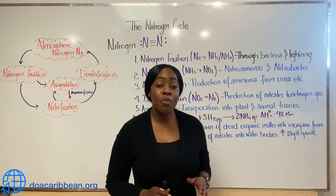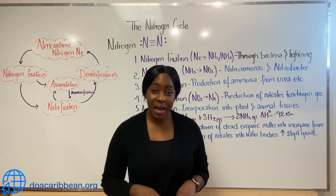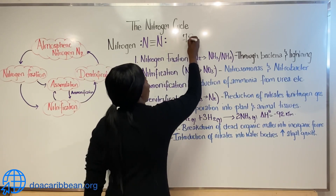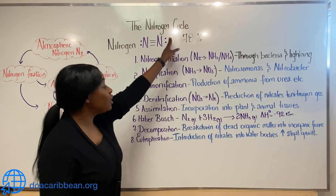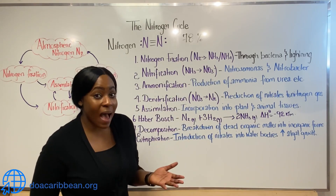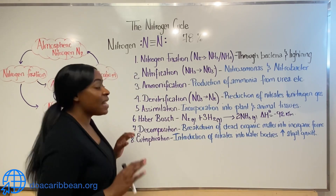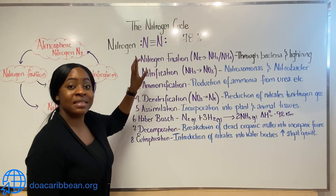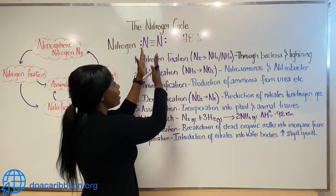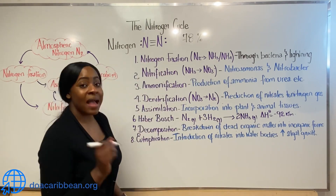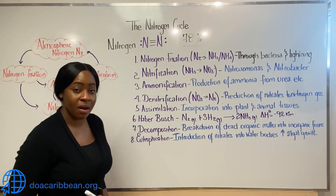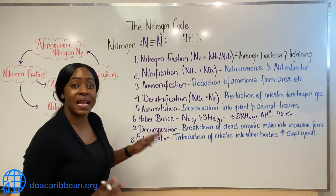Nitrogen, the most abundant gaseous element. As a matter of fact, it makes up 78% of our atmosphere. And nitrogen is also ubiquitous in many living things, like plants and animals. Nitrogen in its elemental form seen here is diatomic, meaning that there are two atoms of nitrogen connected together via a triple bond. And even though gaseous nitrogen is so abundant in the atmosphere,